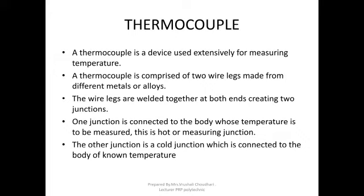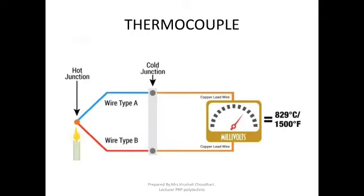When two different metals are used, their thermal conductivity — that is, their temperature-carrying capacity — is different. We use wire type A and wire type B. When they are joined at the hot junction and we heat it using a candle, the other junction — the cold junction — is connected to a voltmeter. Wire A, which is a good conductor, carries temperature easily, while wire B is a less-efficient conductor of heat and electricity. The difference in temperature is measured by the thermocouple to sense the temperature of the hot junction.